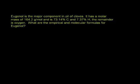Eugenol is a major component in oil of cloves. It has a molar mass of 164.2 grams per mole and is 73.14% carbon and 7.37% hydrogen. The remainder is oxygen. What are the empirical and molecular formulas for eugenol?